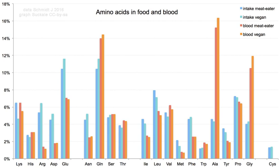Proteinogenic amino acids are called essential for humans because they cannot be produced from other compounds by the human body and so must be taken in as food. Others may be conditionally essential for certain ages or medical conditions. Because of their biological significance, amino acids are important in nutrition and are commonly used in nutritional supplements, fertilizers, feed, and food technology. Industrial uses include the production of drugs, biodegradable plastics, and chiral catalysts.